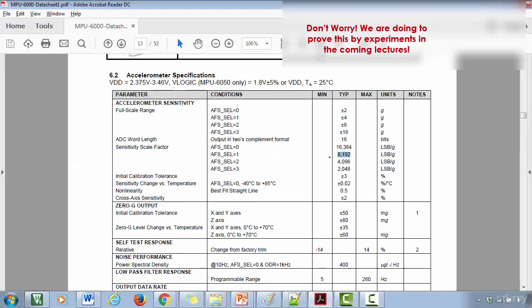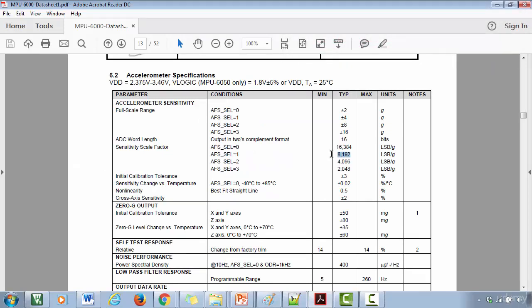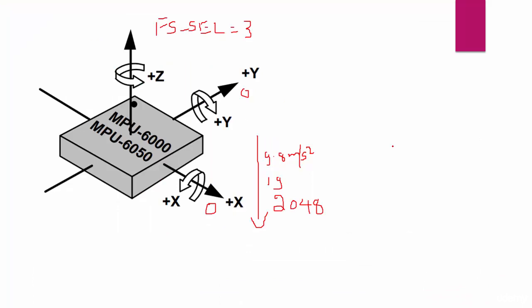So you can compare the value which you get from experiment with these values mentioned in the datasheet. It should match. It won't match exactly but it should be close to these values. So that's about the accelerometer full-scale selection. So now let's move to the gyroscope full-scale selection.